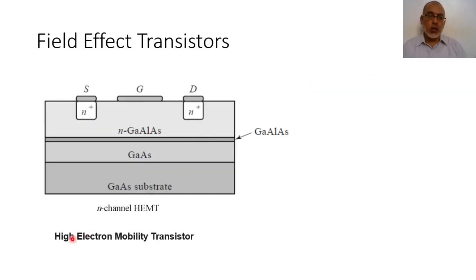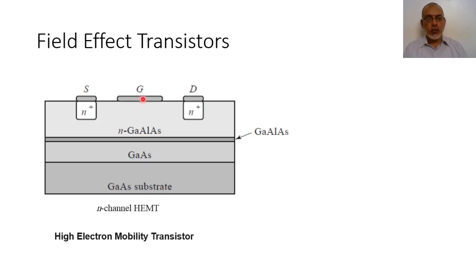The third type is the high electron mobility transistor. The idea of the HEMT is completely different from a traditional field effect transistor, though its construction is basically like the metal semiconductor field effect transistor — we have N-plus regions at the source and drain, an N-type channel, and the gate connected directly to the channel. The main idea of the HEMT is using a wide bandgap material of N-type connected to a narrow bandgap intrinsic material, and the relation between the gate and the channel is a Schottky diode biased in reverse.